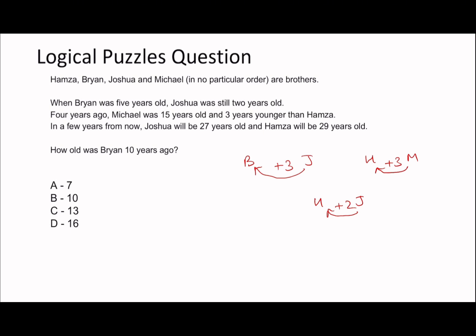Based on the idea that J to H is plus two and J to B is plus three, H to B must be plus one. And since M to H is plus three and J to H is plus two, M to J must be plus one. So we know Michael is one year younger than Joshua, Joshua is two years younger than Hamza, and Brian is one year older than Hamza.